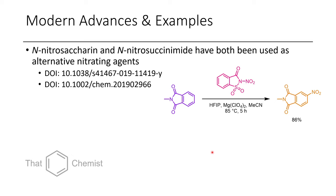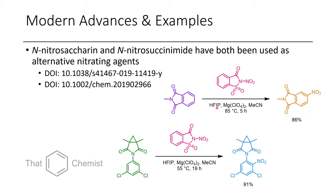Recently, there have been advances with new N-nitro reagents such as N-nitrosaccharin and N-nitrosaxinamide. Saccharin is an older artificial sweetener. N-nitrosaccharin is able to functionalize various electron-deficient aromatics quite selectively, though ortho-para selectivity issues can still arise. Notably, these reactions use HFIP — the so-called magic solvent — for this transformation. Another cool example was applying this to a drug derivative, where a nitro group was selectively installed.